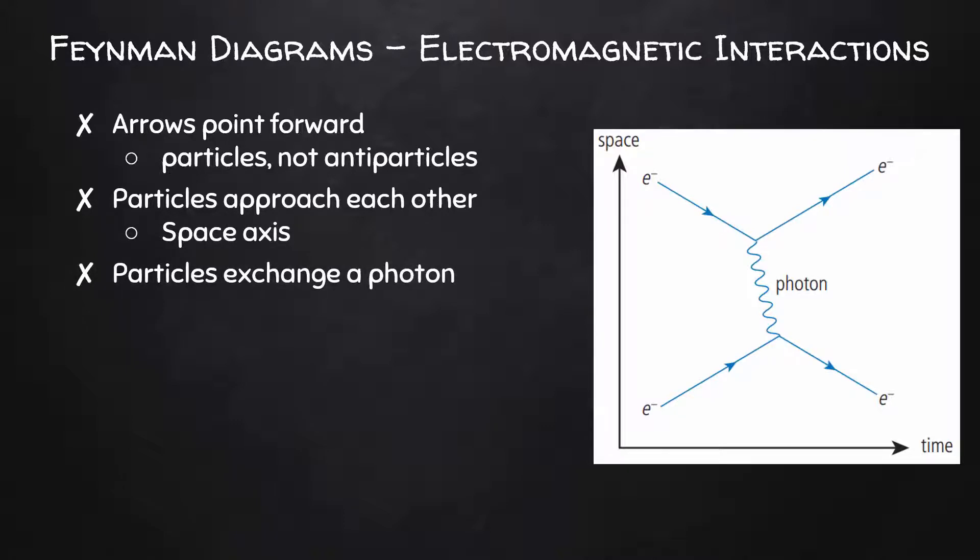At some point, they exchange a photon. This is actually what we call a virtual photon. This is a photon that exists for an incredibly minuscule amount of time that is really just a manifestation of the electromagnetic field through which these two electrons are interacting. This means that the photon is considered the exchange particle of the electromagnetic force.